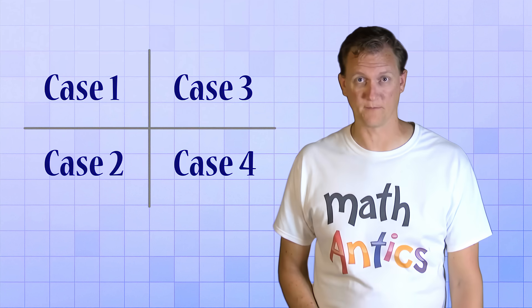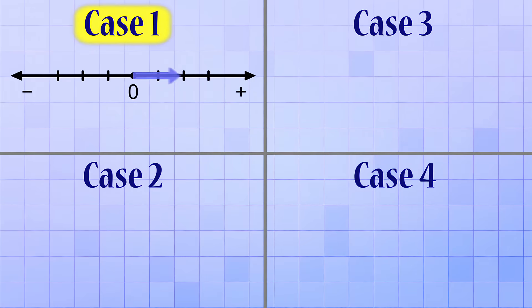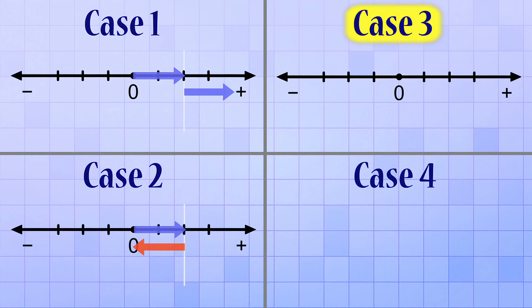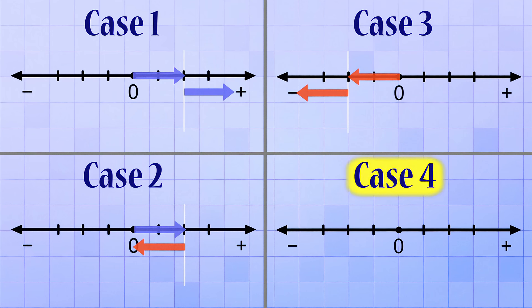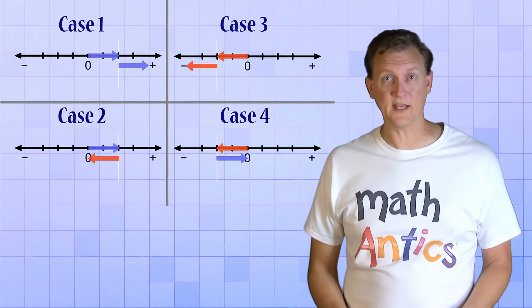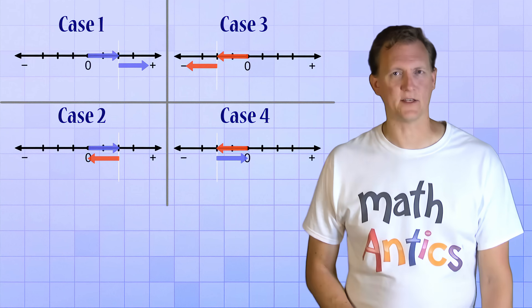Now that you know our two rules, I want to show you that there's really only four different types of problems, or four cases, when adding or subtracting integers. In case 1, you start with a positive number and you make it more positive. In case 2, you start with a positive number and you make it more negative. In case 3, you start with a negative number and you make it more negative. And in case 4, you start with a negative number and you make it more positive. The key to getting the right answer is to figure out which of these cases you're dealing with. So let's look at each case in more detail.